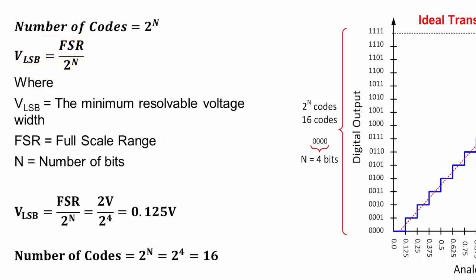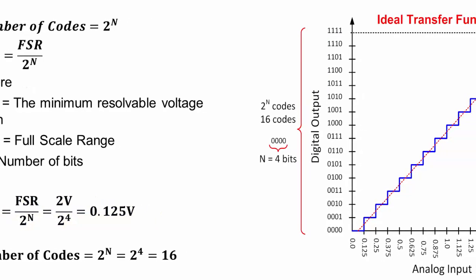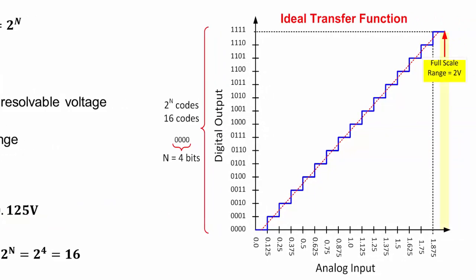In this example, the least significant bit width, or resolution, can be calculated by dividing 2 volts by 16 to get a resolution of 0.125 volts. The full scale range in this example is 2 volts, but the maximum detectable input voltage is the full scale range minus 1 LSB, or 1.875 volts in this example.